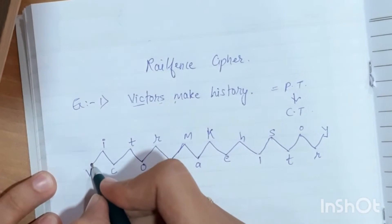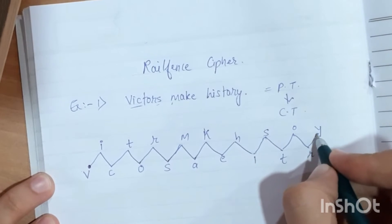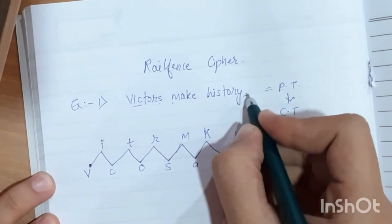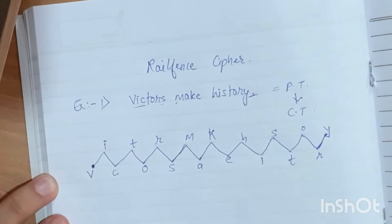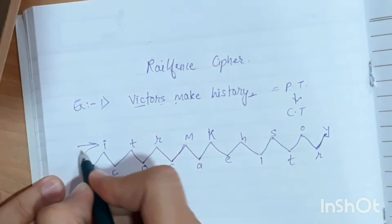After that, you place the rail fence in zigzags. This method is the zigzag method.